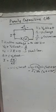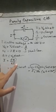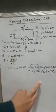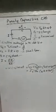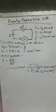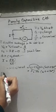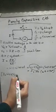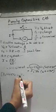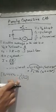Students, we are discussing the purely capacitive circuit and we have calculated the value of the alternating current. What we did is we differentiated the value of q with respect to t, and we got the final equation: i = i₀ sin(ωt + 90°). Now, i₀ equals ωCV₀, which can also be written as V₀ divided by 1/ωC.